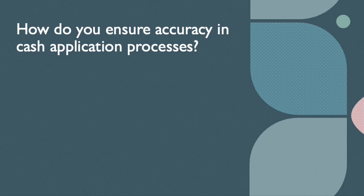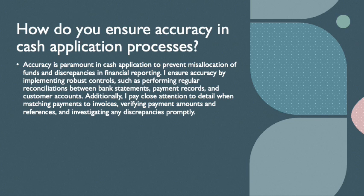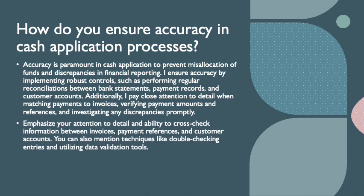The next question is: how do you ensure accuracy in cash application processes? Accuracy is paramount in cash application to prevent misallocation of funds and discrepancies in financial reporting. I ensure accuracy by implementing robust controls such as performing regular reconciliations between bank statements, payment records, and customer accounts. I pay close attention to detail when matching payments to invoices, verifying payment amounts and references, and investigating any discrepancies promptly. You can also mention techniques like double-checking entries and utilizing data validation tools.